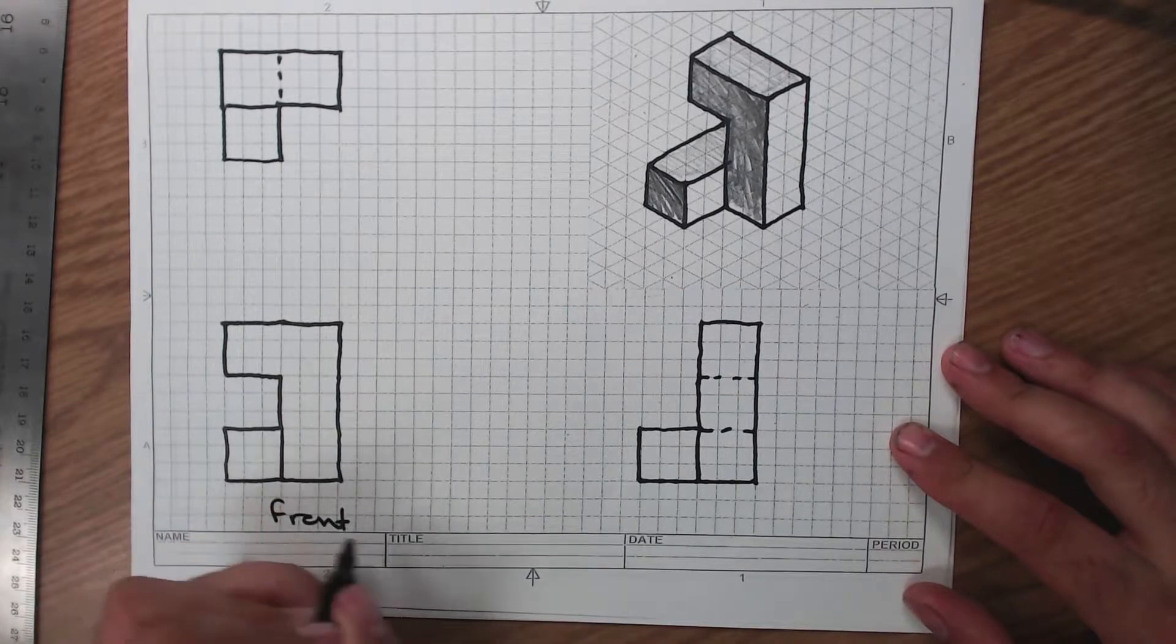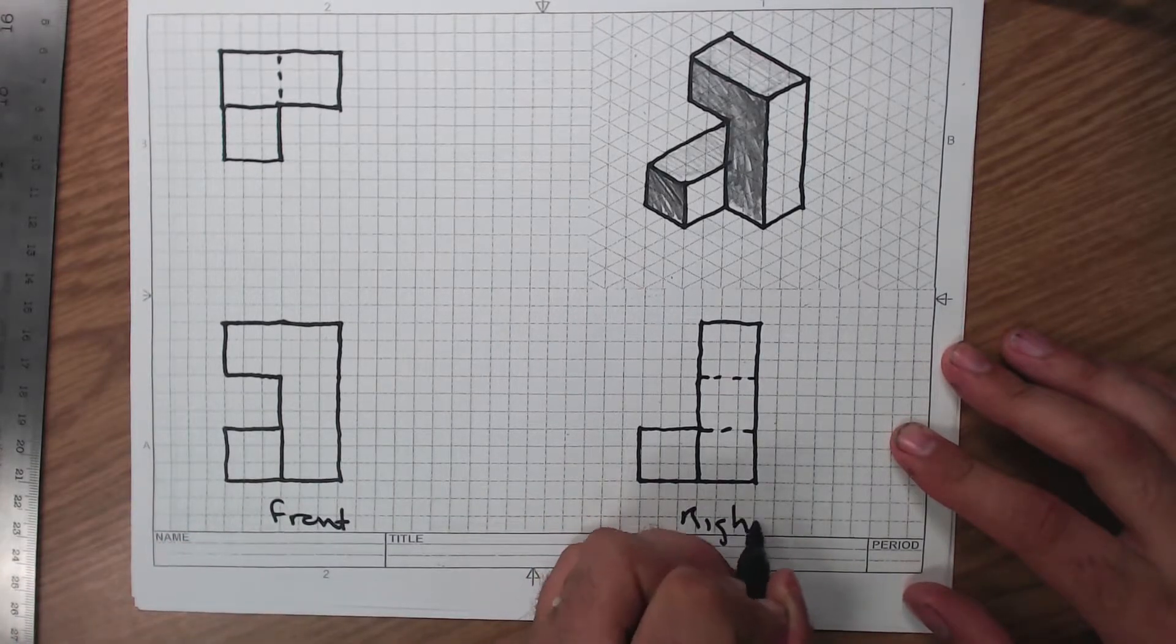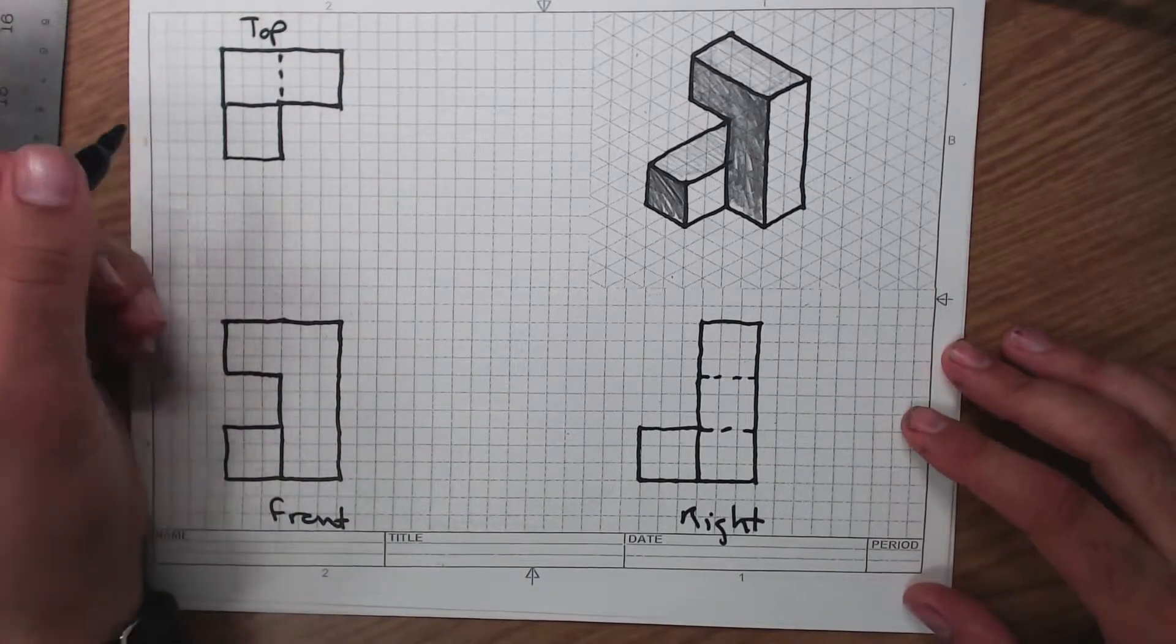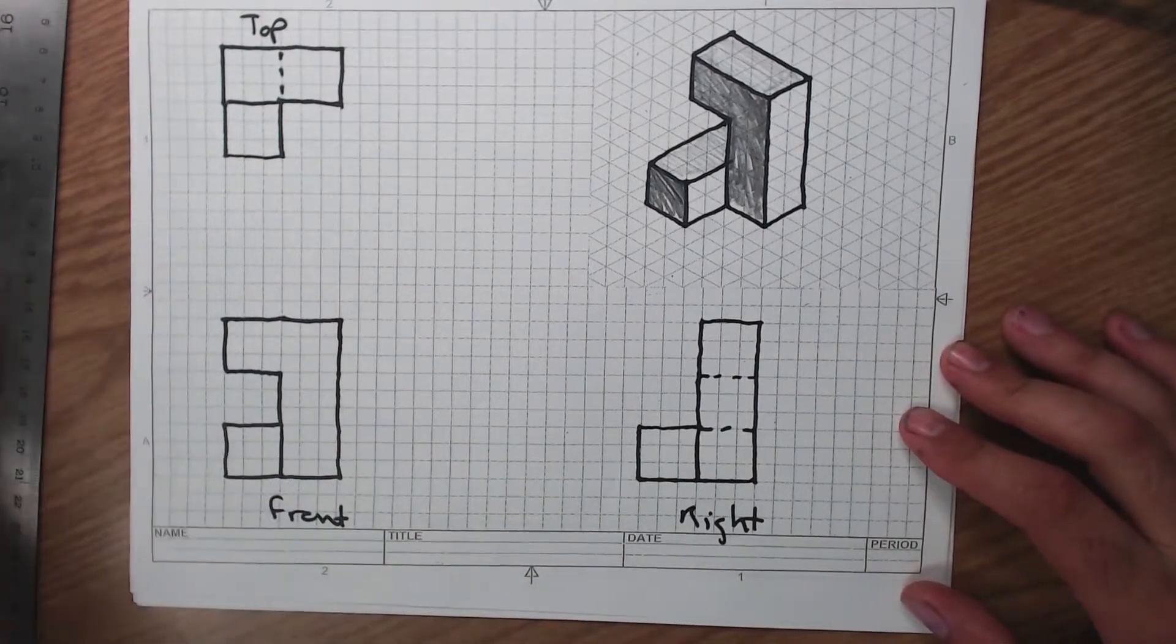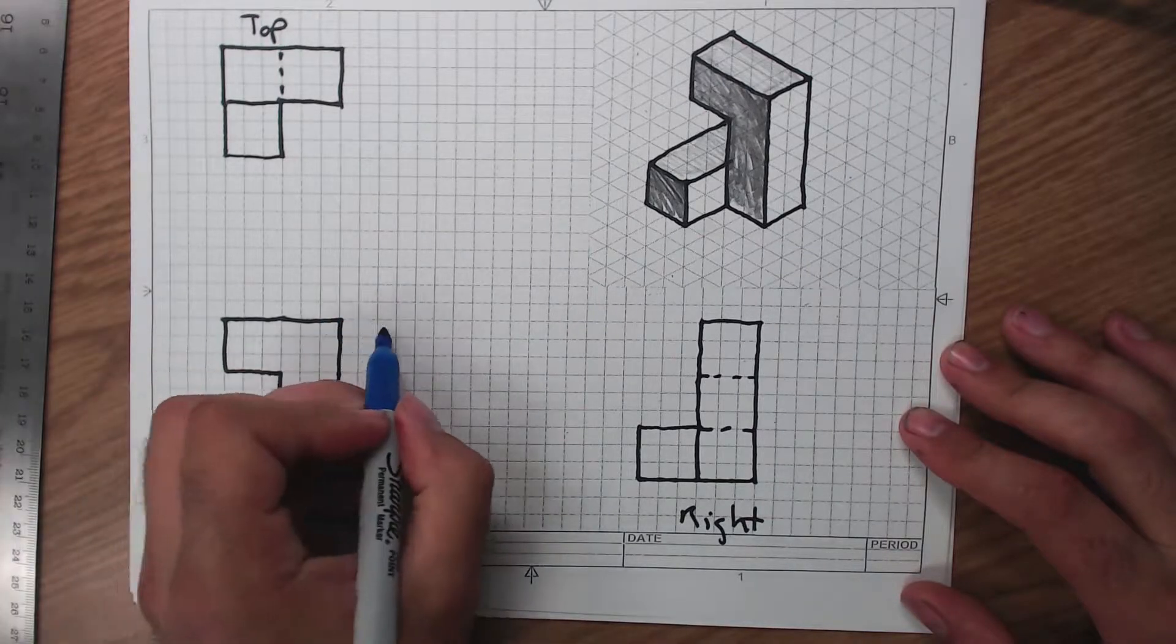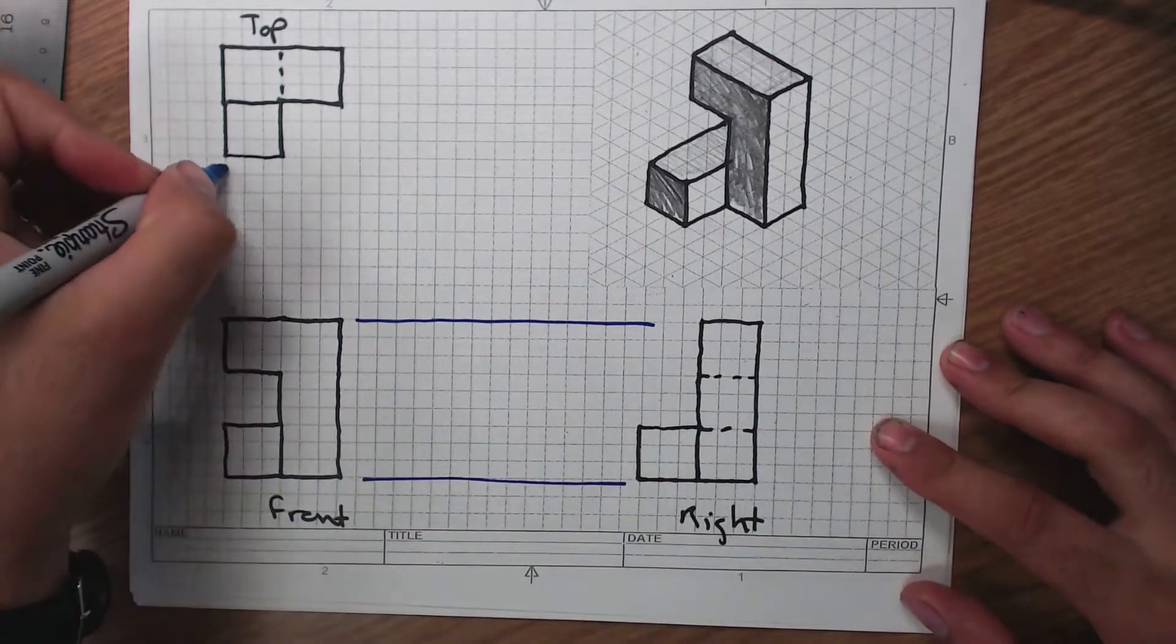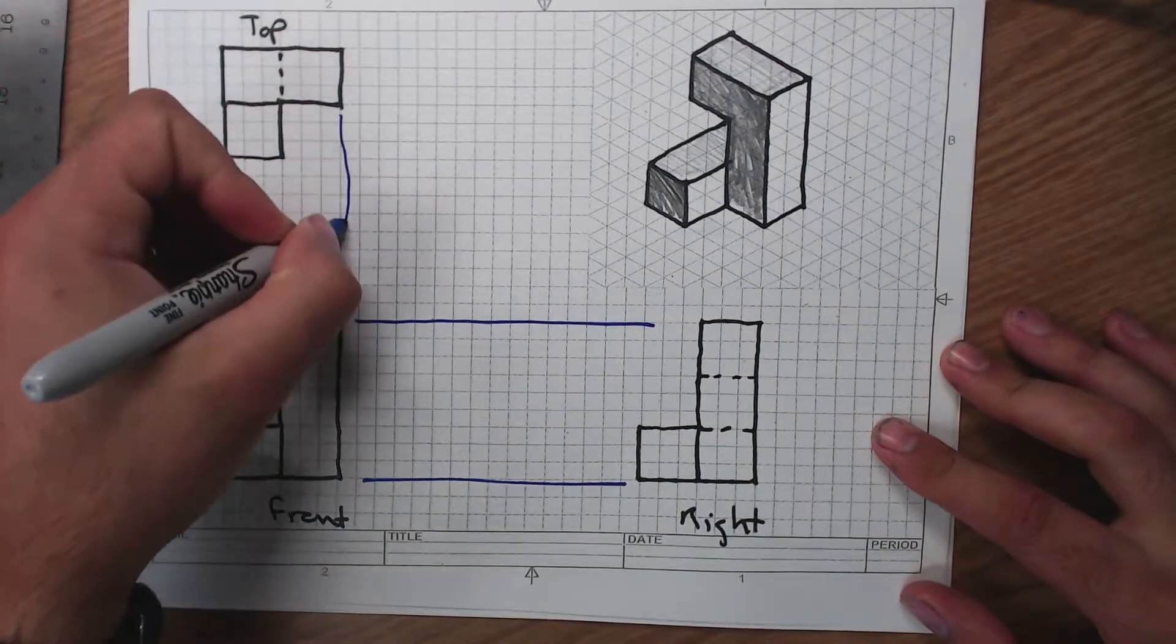But this is one isometric drawing with its multi-view pairs here. And again, this is my front, my right, and my top. Don't forget, I'll do it in a different color.